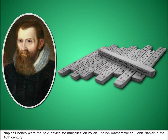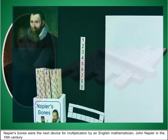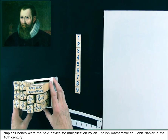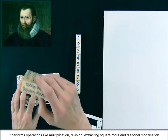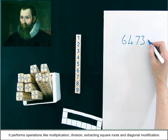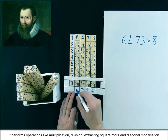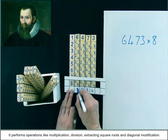Napier's bones were the next device for multiplication by an English mathematician, John Napier, in the 16th century. It performs operations like multiplication, division, extracting square roots and diagonal modification.